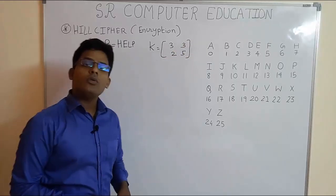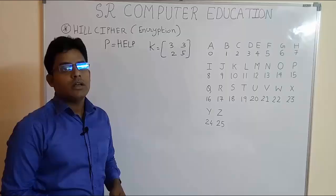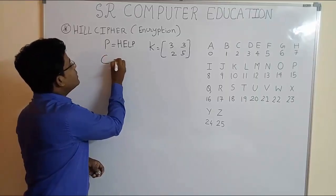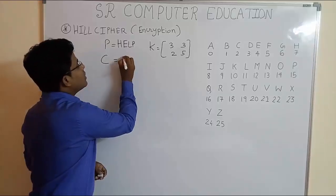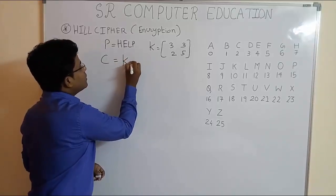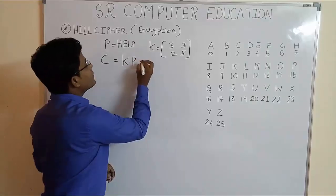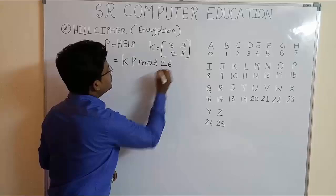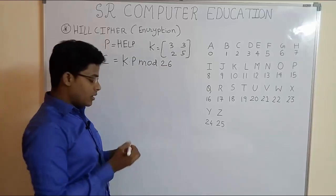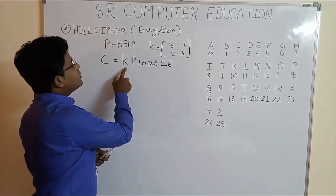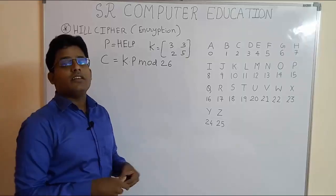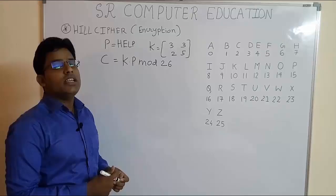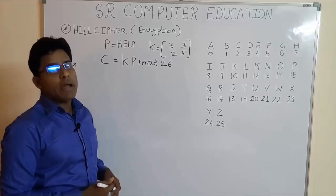Now formula to solve Hill Cipher encryption is ciphertext C equal to K dot P mod 26. Now you have to remember here one thing. Here the K and P, the multiplication is not the normal multiplication. It is a matrix multiplication. So we need both K and P in matrix form.